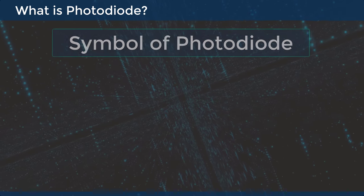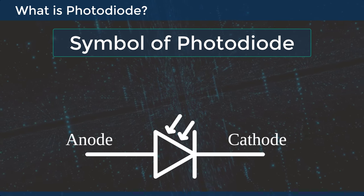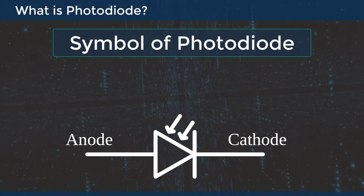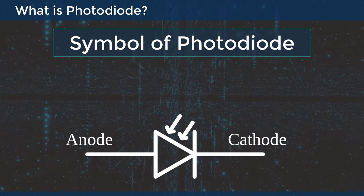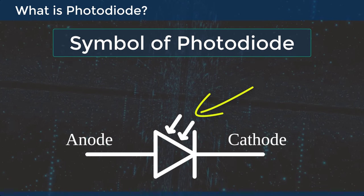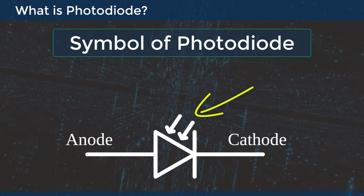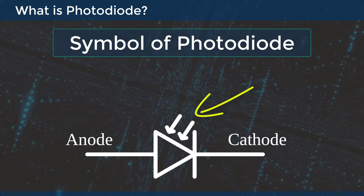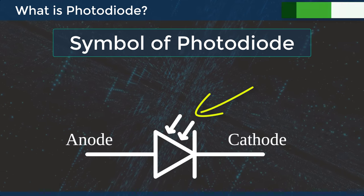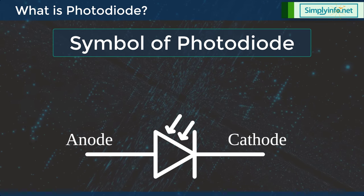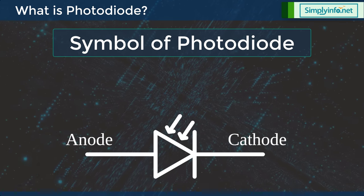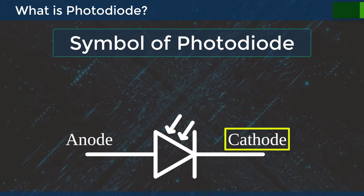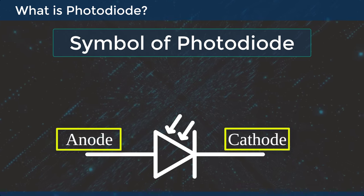The symbol of a photodiode is similar to the normal PN junction diode except that it contains arrows pointing towards the diode. These arrows represent light or photons. A photodiode has two terminals: a cathode and an anode.